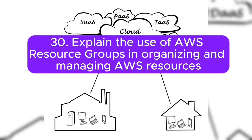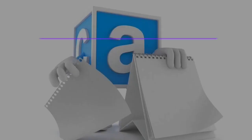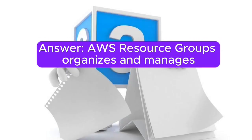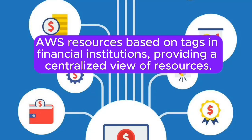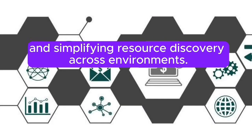Question 30: Explain the use of AWS Resource Groups in organizing and managing AWS resources based on tags for financial institutions, and how it contributes to resource governance. Answer: AWS Resource Groups organizes and manages AWS resources based on tags in financial institutions, providing a centralized view of resources. It contributes to resource governance by enabling the application of policies, ensuring compliance, and simplifying resource discovery across environments.